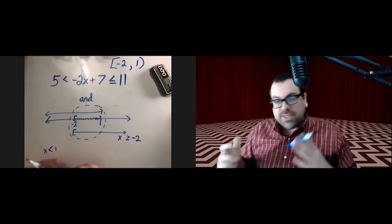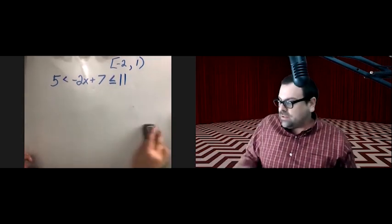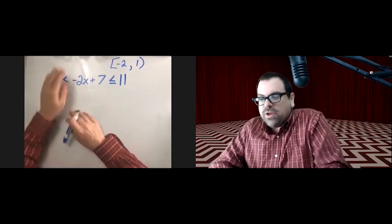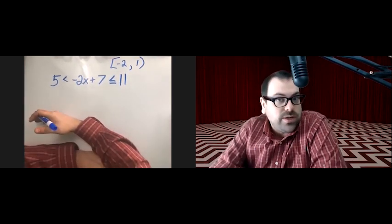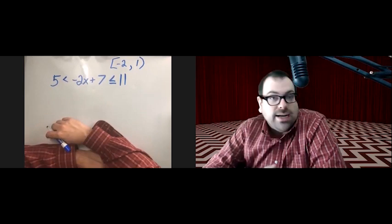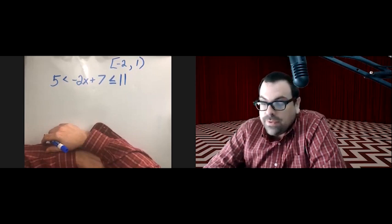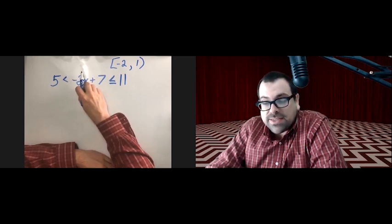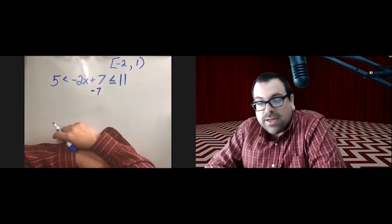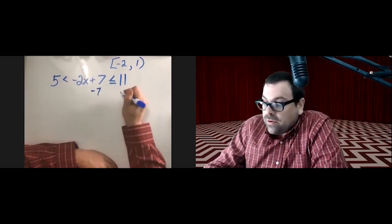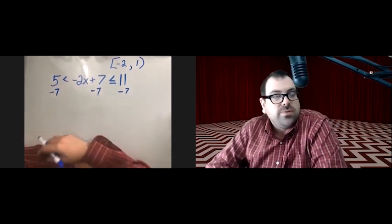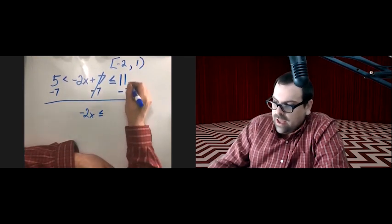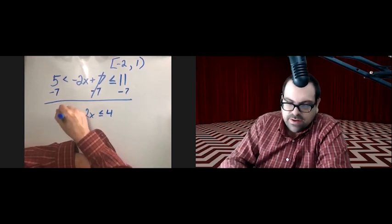There's a shortcut: leave the three-part form together. Whatever we do in the middle, we do on all three sides — left, middle, and right. To get x by itself, get rid of plus 7 by subtracting 7 from all three parts. That leaves negative 2x in the middle, 4 on the right, and negative 2 on the left.